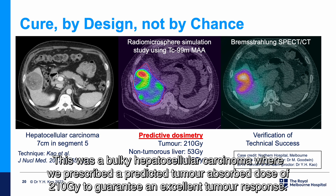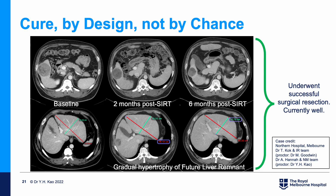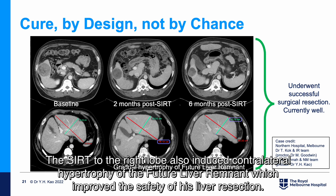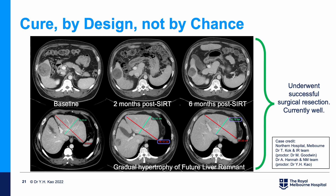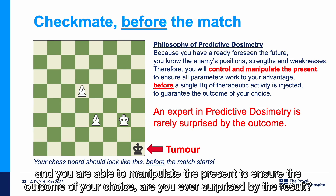This is an example where we were in full control over all aspects of SIRT to guarantee a successful outcome. This was a bulky hepatocellular carcinoma where we prescribed a predicted tumour-absorbed dose of 210 grey to guarantee an excellent tumour response. This patient was successfully downstaged to curative resection and remains well today. The SIRT to the right liver lobe also induced contralateral hypertrophy of the future liver remnant, which improves the safety of his liver resection. Ask yourself: if you have already foreseen all possible outcomes and can manipulate the present to ensure the outcome of your choice, are you ever surprised by the result?